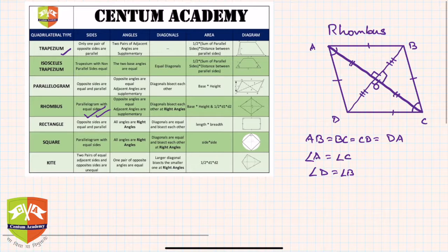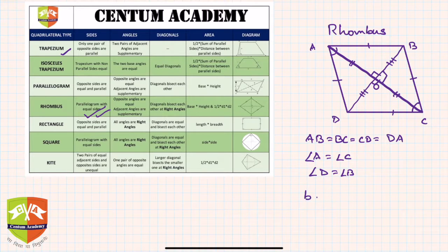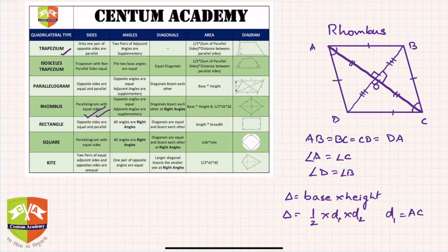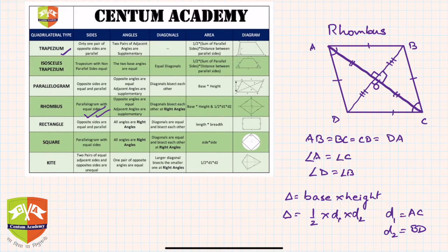What is the area of a rhombus? Since a rhombus is also a parallelogram, you can apply base into height. Another way to find the area is: delta equals half into d1 into d2, where d1 equals diagonal AC and d2 equals the other diagonal BD. We are not going into proofs in this session — we will take up proofs one by one later.